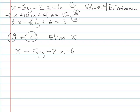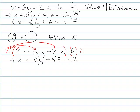x minus 5y minus 2z equals 6, and then negative 2x plus 10y plus 4z is equal to negative 12. So if I want to eliminate the x, I can do that by multiplying everything here by 2, right? So if I distribute my 2 all the way across, what I'm going to end up with is 2 times x is 2x and then minus 10y and then minus 4z equals 12.